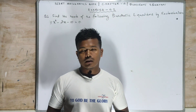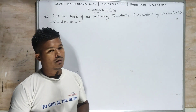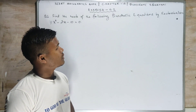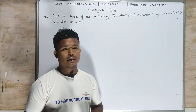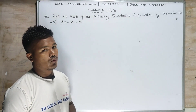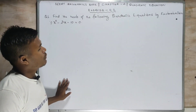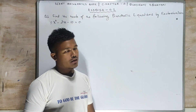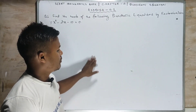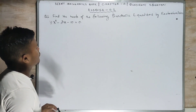Welcome back to the online class of Mathematics Class 10, NCERT book. In the last class we did 4.1, the quadratic equation chapter. Today I'll begin with 4.2, question number one. The first question says: find the roots of the following quadratic equation by factorization. I have talked about the factorization method many times, so the same thing we are going to do and learn today.